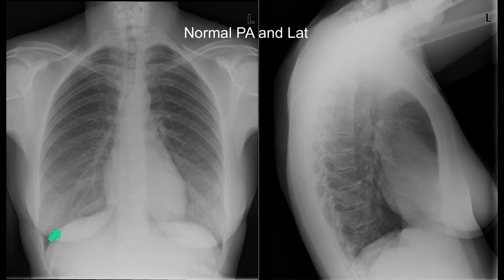The diaphragm is visible because the interface between the diaphragm and the aerated lung above and the solid organs below creates contrast. Note that you don't see the diaphragm where the heart sits on it — it just comes into view on the left side.